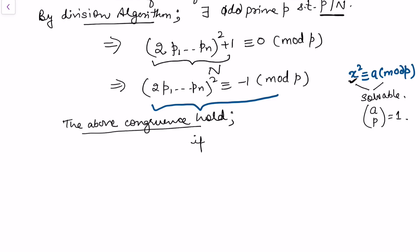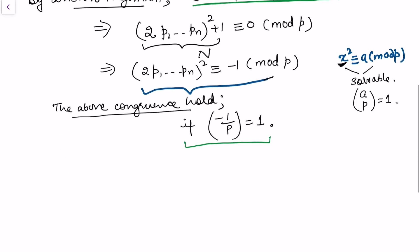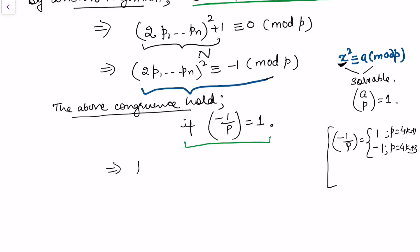The above congruence holds if and only if the Legendre symbol (-1/p) = 1. From our earlier results, the Legendre symbol (-1/p) equals +1 if p is of the form 4k+1, and -1 if p is of the form 4k+3. Therefore, this guarantees that p must be of the form 4k+1.